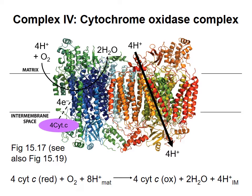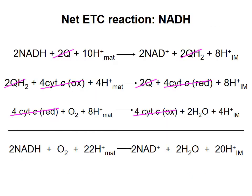You don't need to memorize the reactions for the individual complexes of the electron transport chain. The net reactions for the different complexes can be combined to provide the net reaction for the entire process. Here I've listed the reactions for complexes 1, 3, and 4, and we can cancel out species that appear on both sides — that are produced in one reaction and consumed in the next.